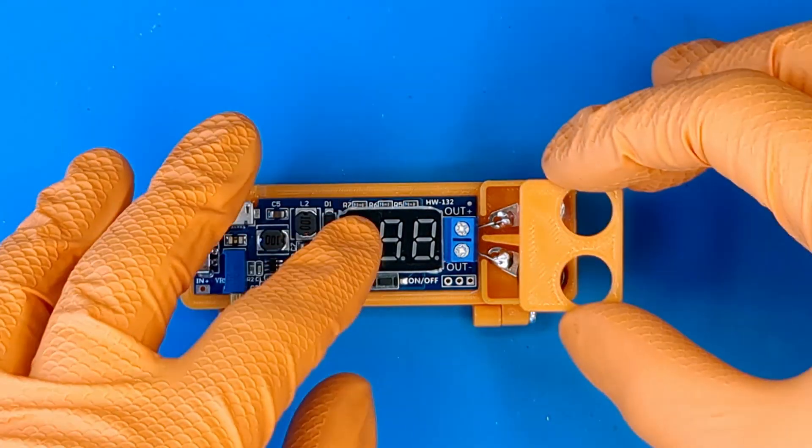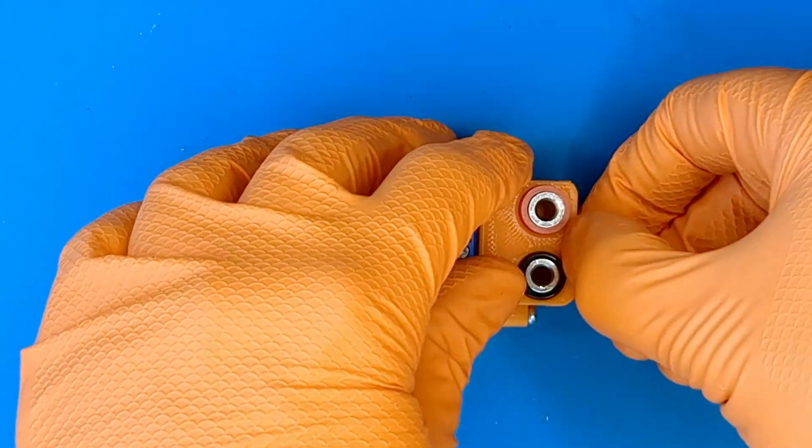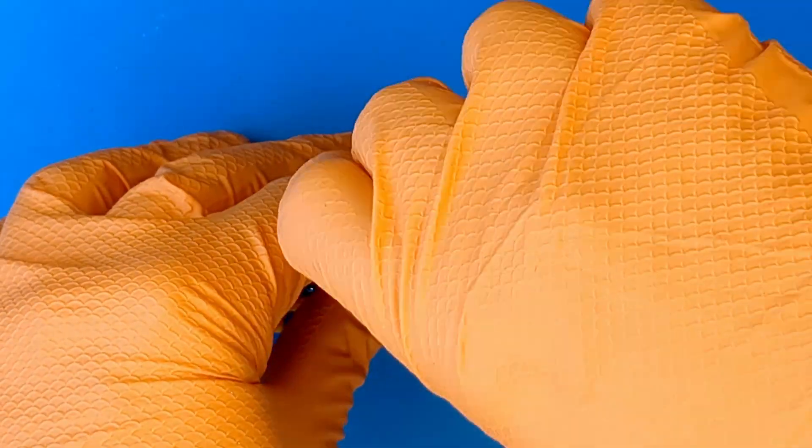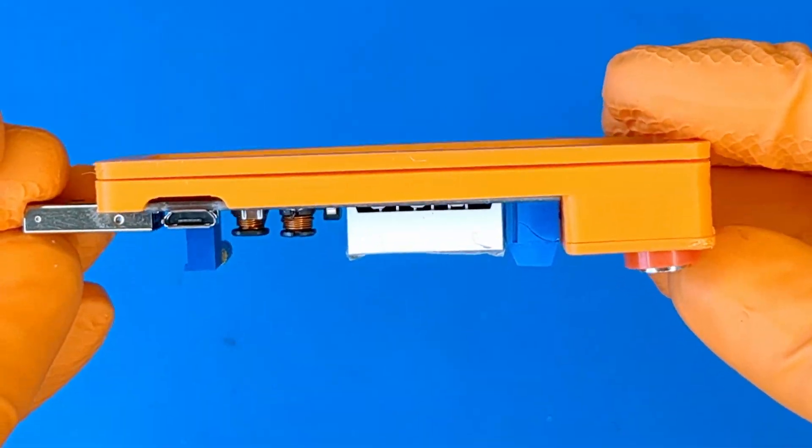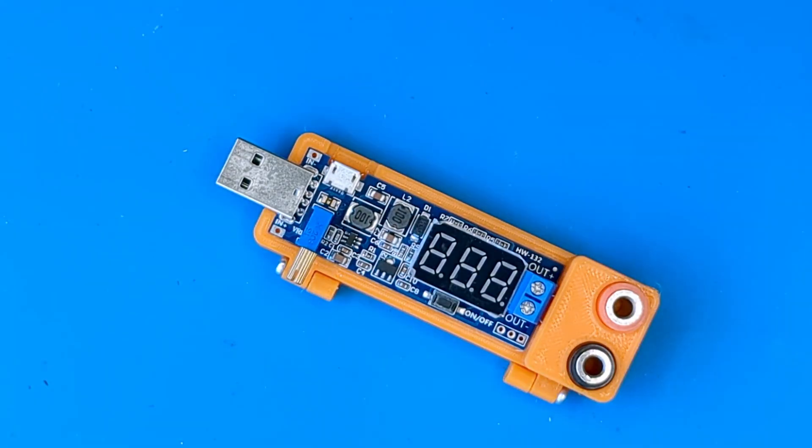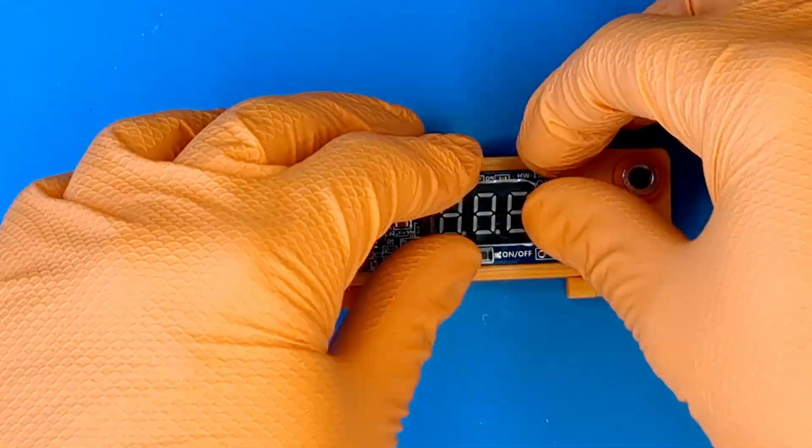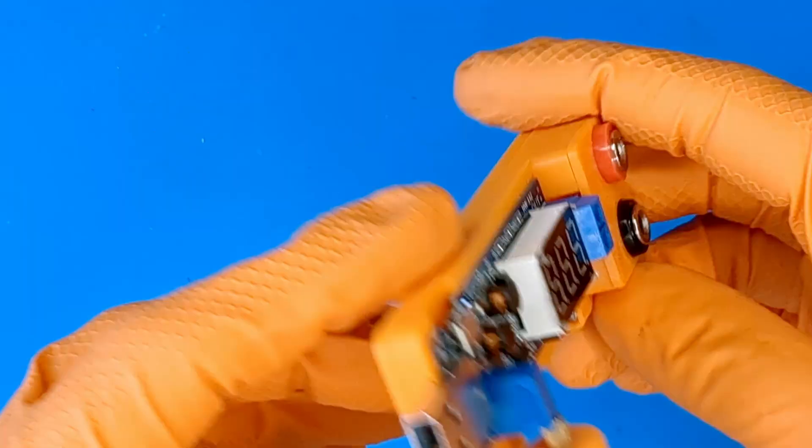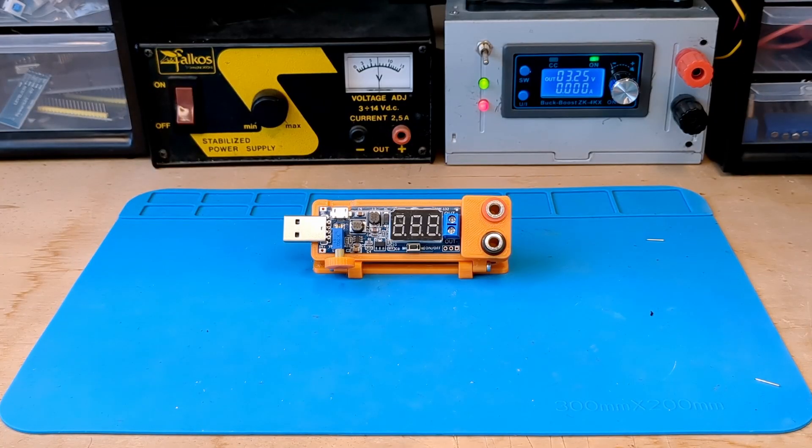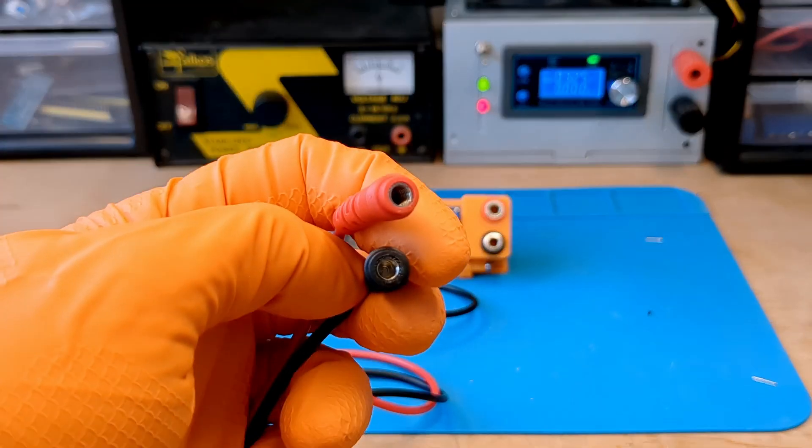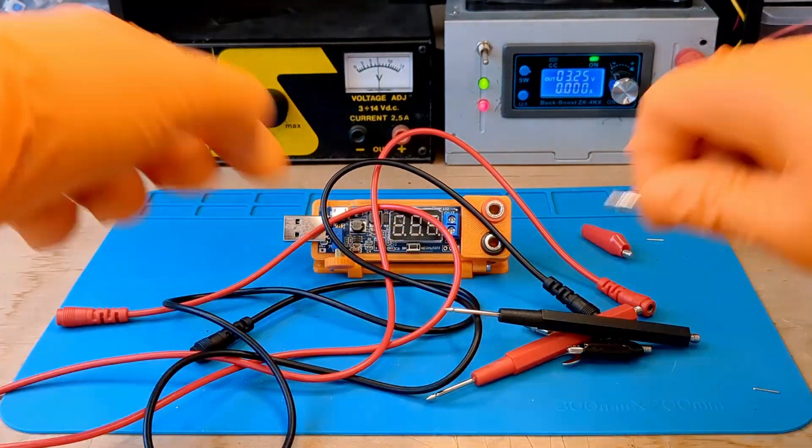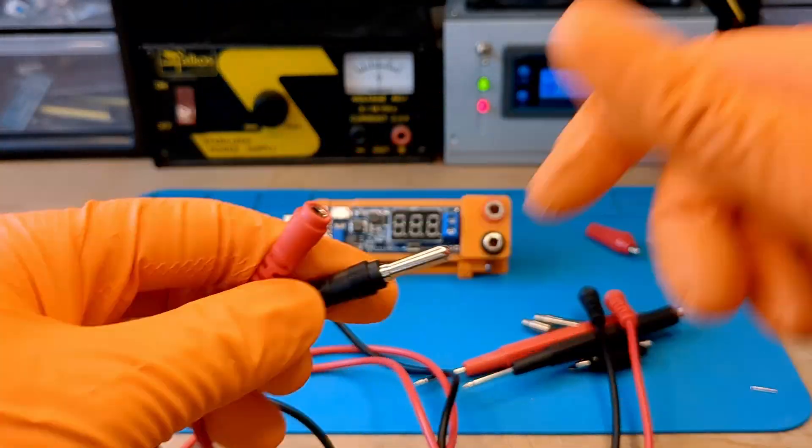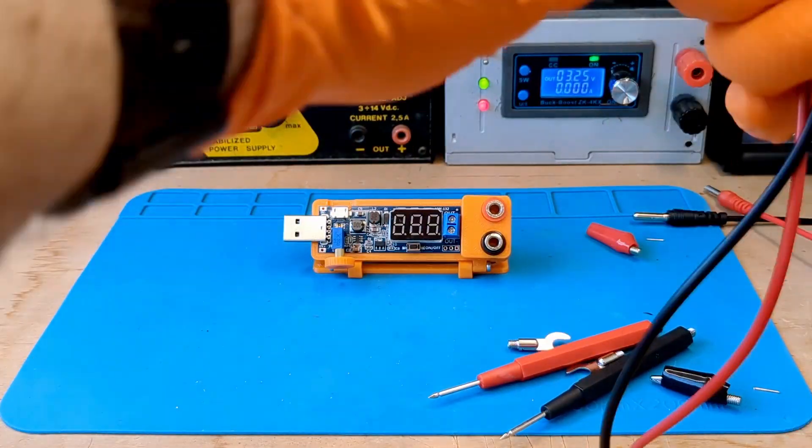Finally, insert the cap and screw the terminals to complete the power supply. I almost forgot. I also printed this knob, which definitely increases the usability of this little power supply. To finish the job, I bought these modular cables. They are very useful because with one cable we can connect to many different connectors. For now we only need banana plugs and alligators.